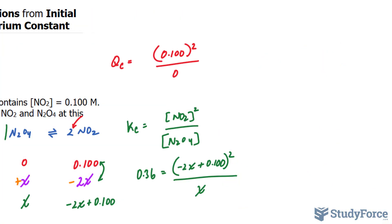Now comes the math part. We need to solve for X. The first thing that I will do is multiply both sides by X. And that will cancel out the X on the right side, leaving us with 0.36X is equal to what's at the top here, negative 2X plus 0.100. And I'll square that because it's being raised to the power of 2. Now I'll expand the right side.